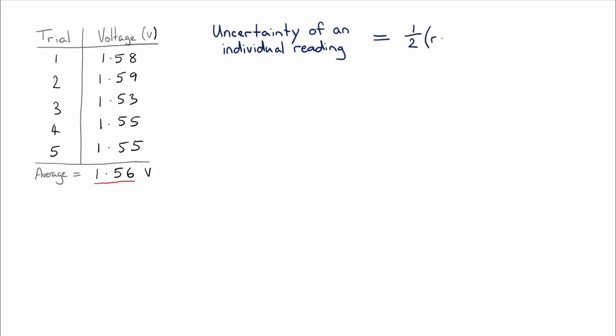The range is the maximum minus the minimum. Any existing or future measurement is likely to be within half the range of whatever your average value is. So we say that an individual measurement or reading has an uncertainty of half the range.